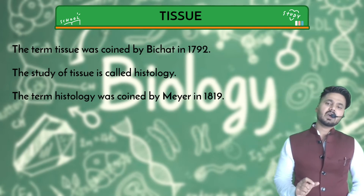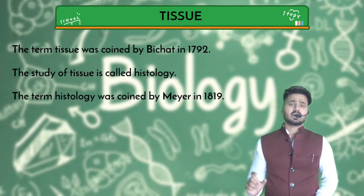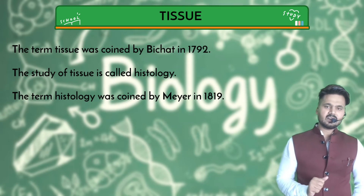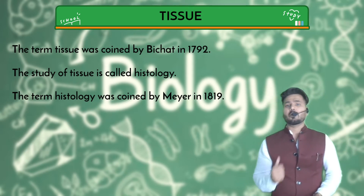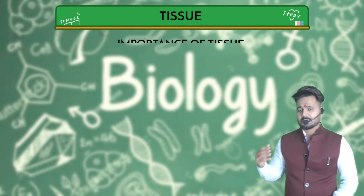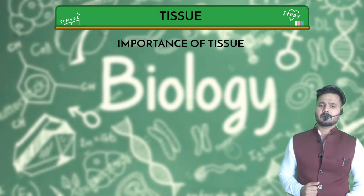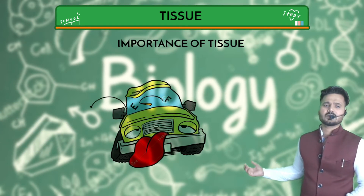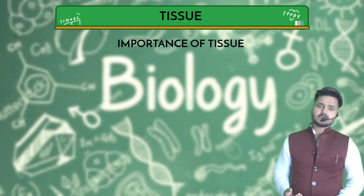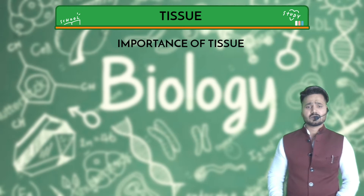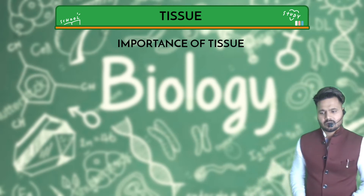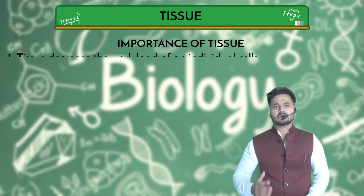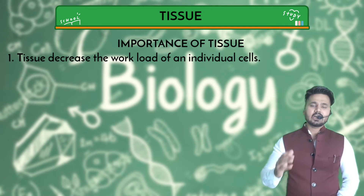Now, what is the importance of tissues? Just like a car needs fuel to run, our body needs tissues for proper functioning. The first importance: tissues decrease the workload of an individual cell. For example, if a single student has to write 10 pages alone versus a group of students sharing the work, the group is obviously faster — similarly, many cells working together reduce the burden on each individual cell.